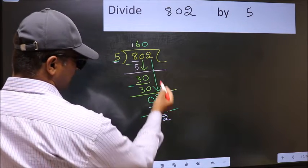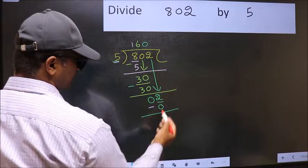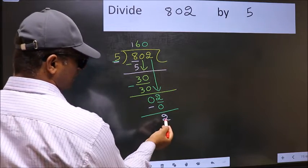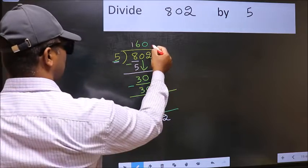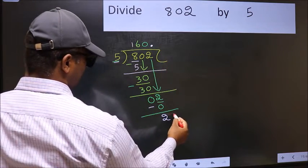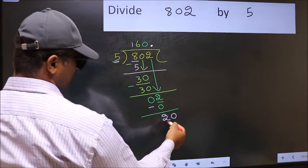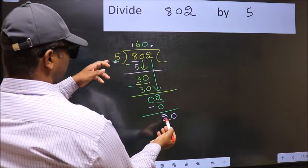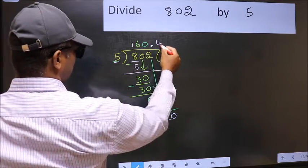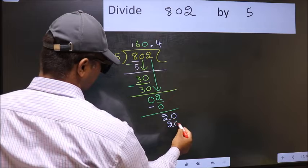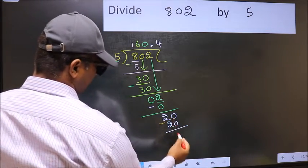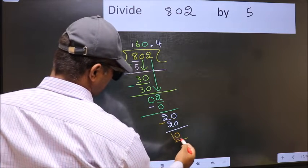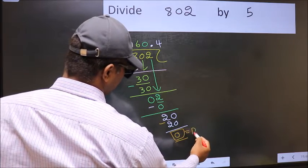Over here, we did not bring any number down. And 2 is smaller than 5. So 20. When do we get 20 in 5 table? 5 fours, 20. Now you should subtract. 20 minus 20, 0. So this is our remainder.